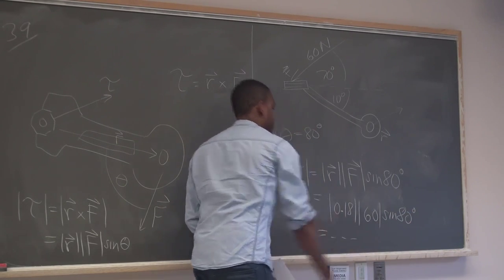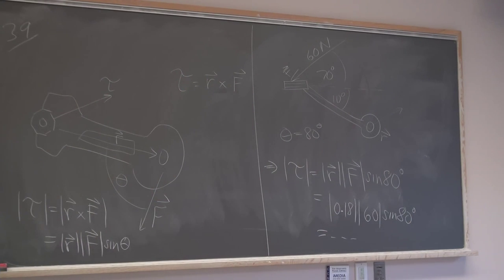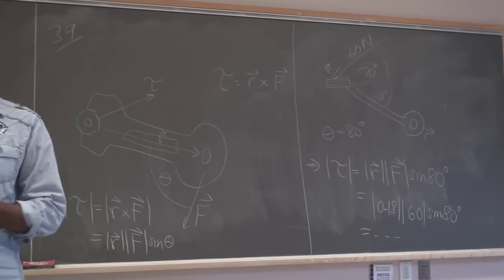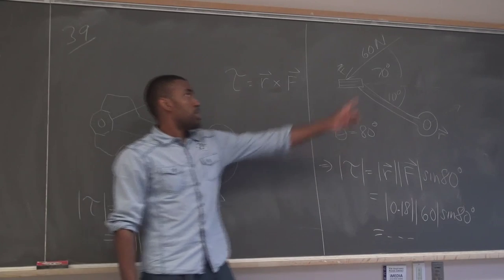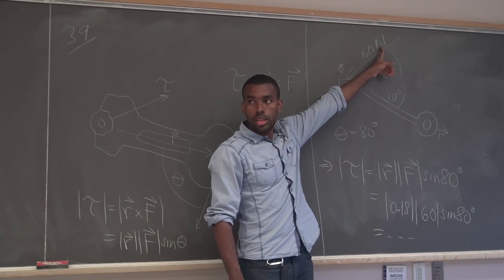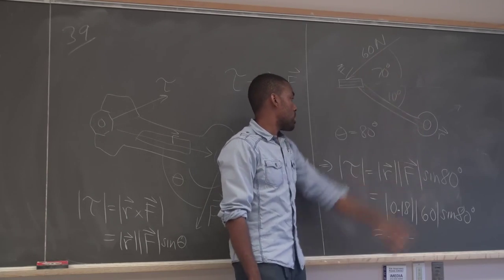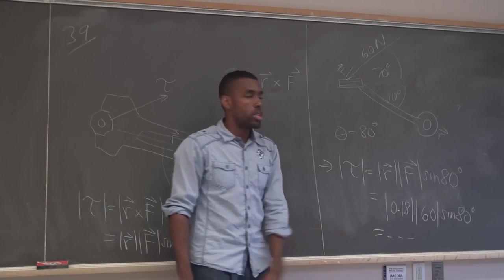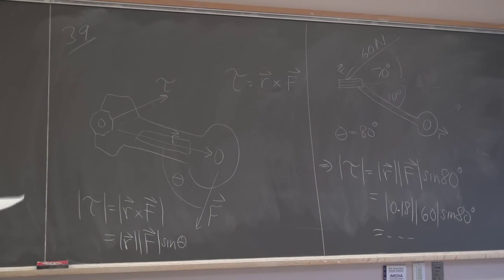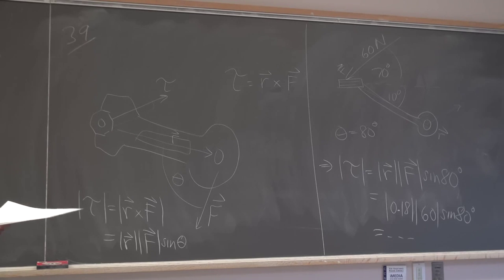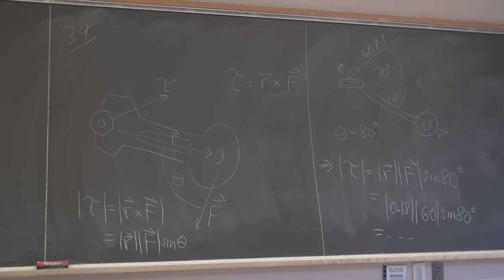R was given as 18 centimeters, so write it in meters as 0.18. The force was 60 sin(80°). You tend to use standard units when working with Newtons, since Newtons use kilograms and meters — so you convert to meters to make the units consistent. I won't test you on torque again; it will come up in physics, but I'm not emphasizing it here.